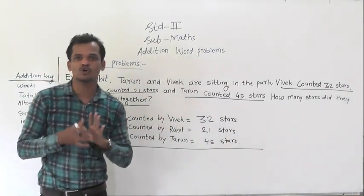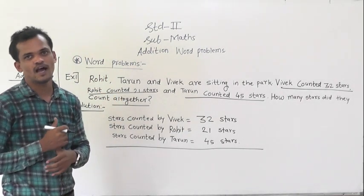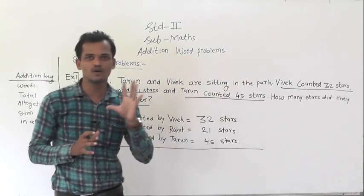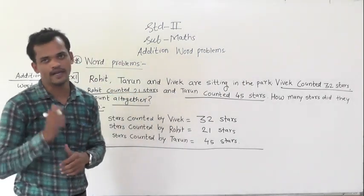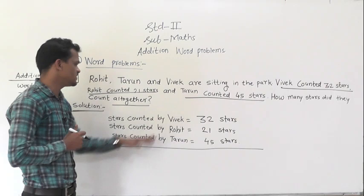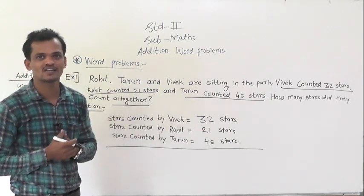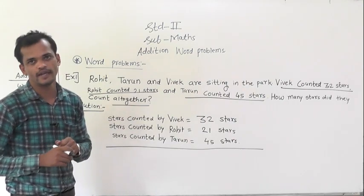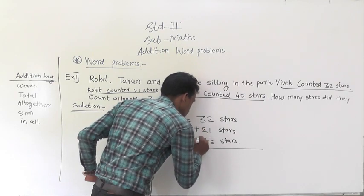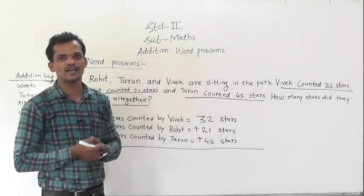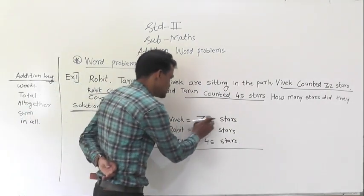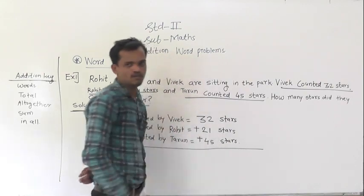Now we will decide which operation we have to do. If the words total, altogether, sum, or in all come in the word problem, then you have to do the addition operation. In this example, we have to find the total stars counted by these three friends, so we have to do addition. Add these three numbers and you will get the number of stars they counted in all.